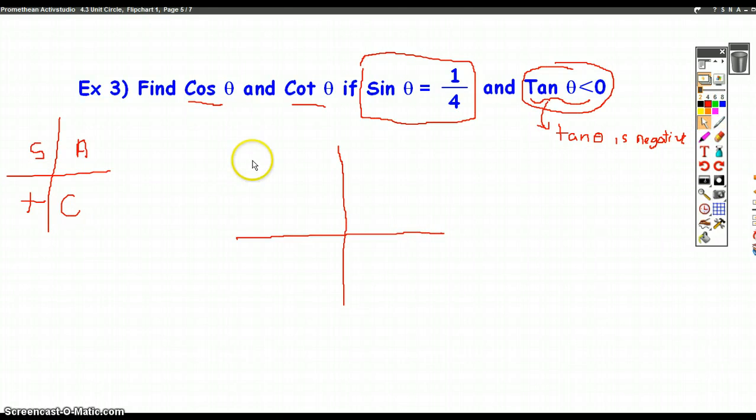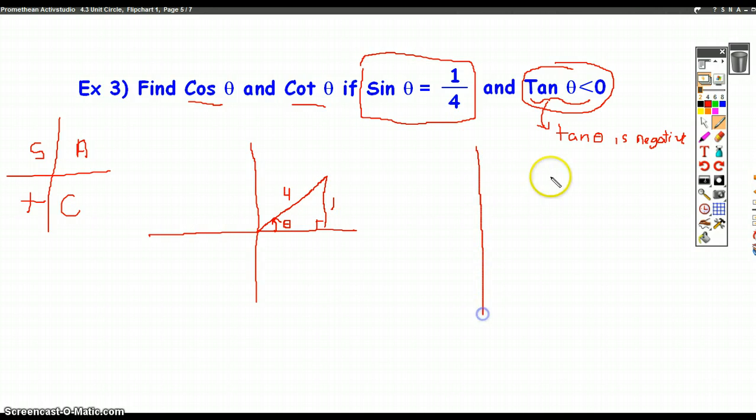At this point we have two options for where we could draw our picture. It could be possible that we rotate a certain angle and land in quadrant 1, and if the sine is 1 over 4, which is opposite over hypotenuse, that would be a 1 and that would be a 4. Or we could have rotated and landed in quadrant 2. Again, the definition of sine tells us that if the sine of the angle is 1 over 4, the opposite must be a 1 and the hypotenuse would be a 4.